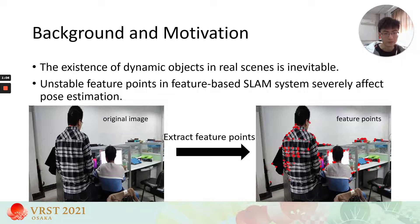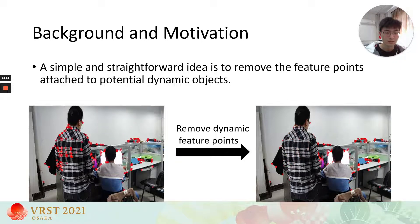The figure on your left side is the original image, and the red dots of the figure on your right side are the feature points. A simple and straightforward idea is to remove the feature points attached to potential dynamic objects.